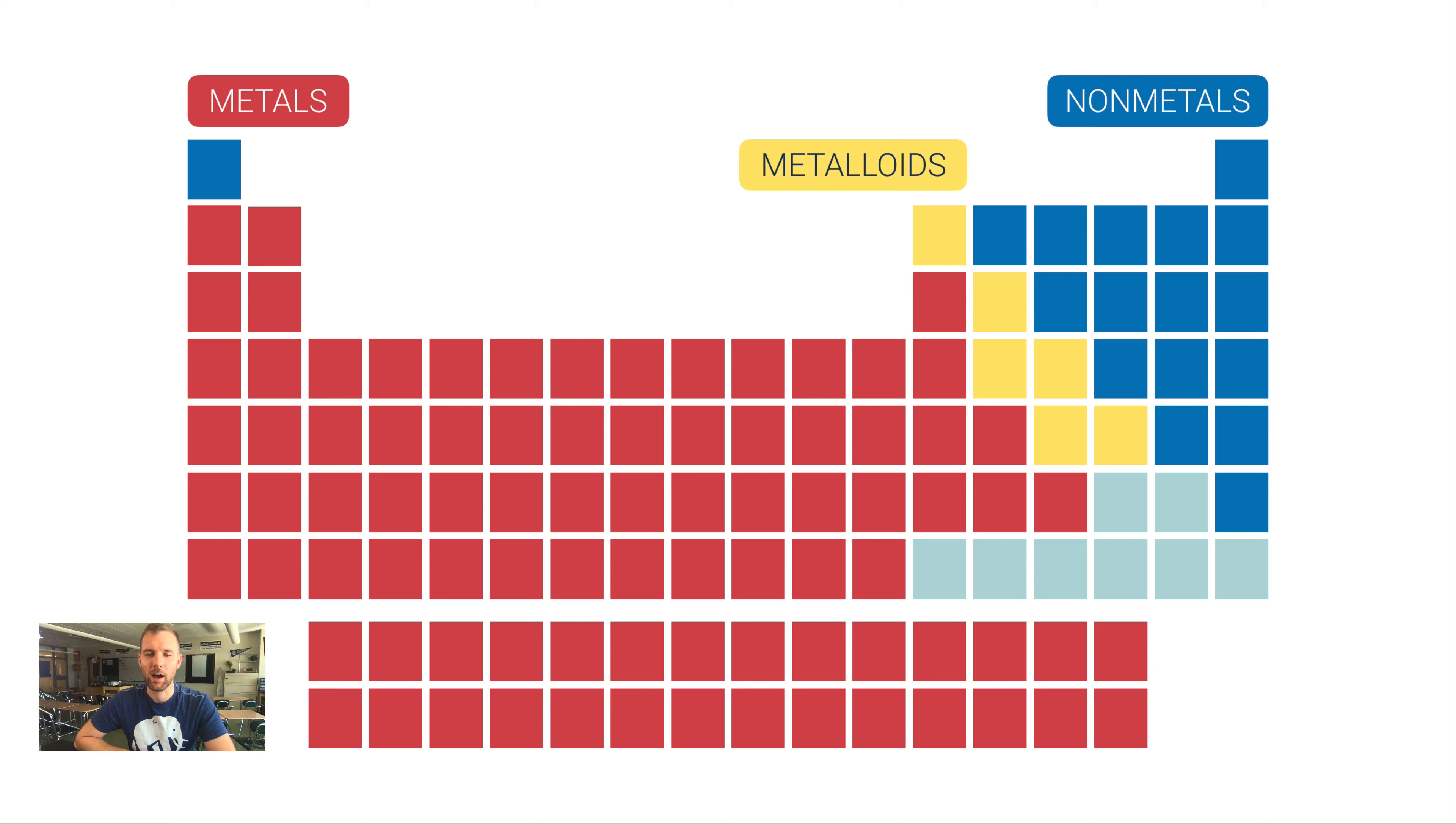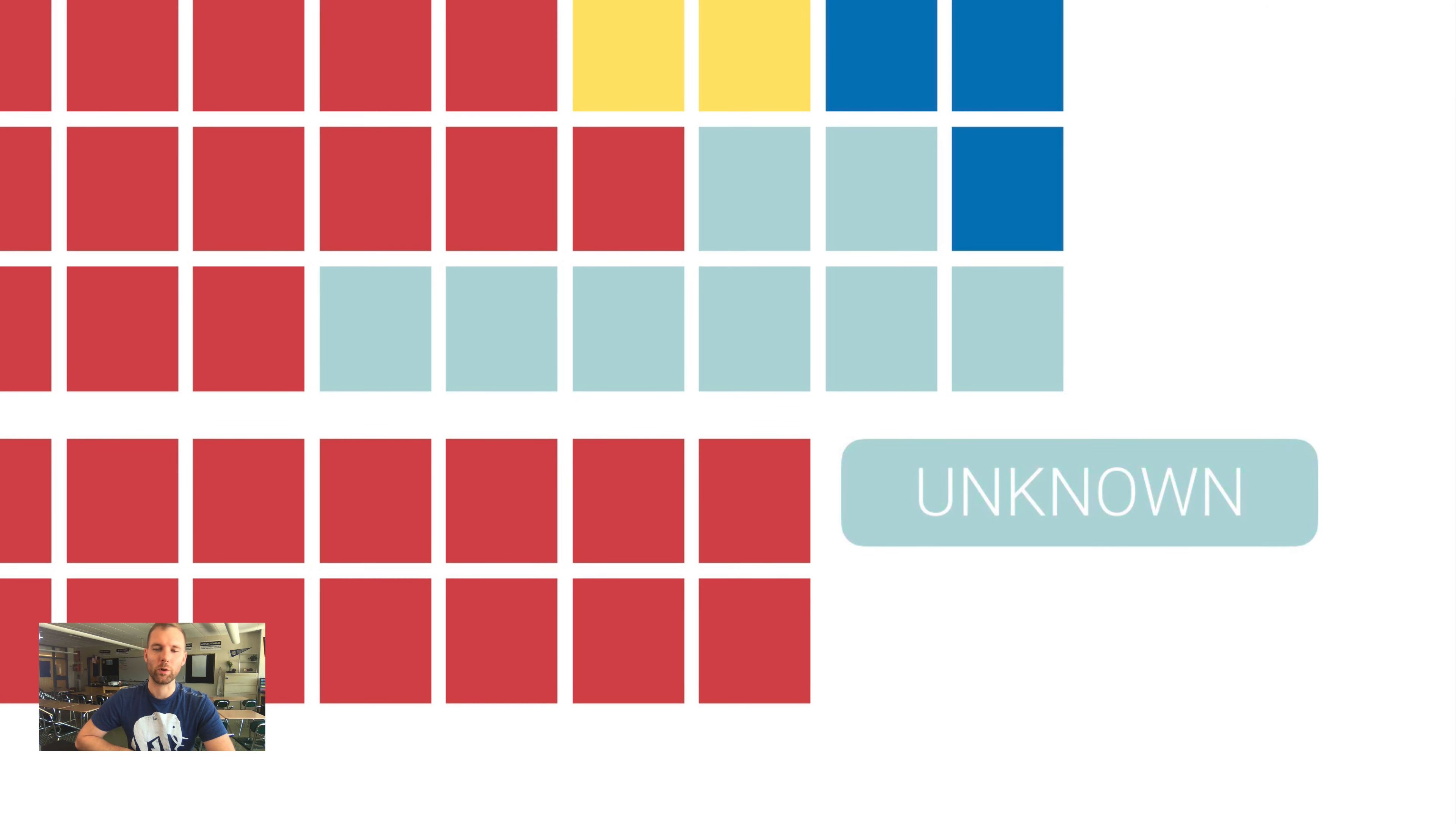The ones in the bottom right corner here, we actually don't know enough about to be able to classify them as one of the types of elements. We've made them synthetically in a lab—that means we just haven't found them naturally on earth or in the universe anywhere.